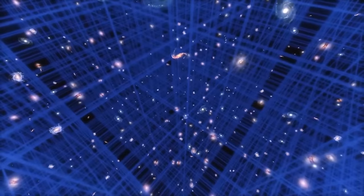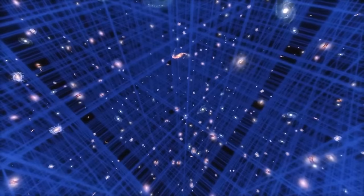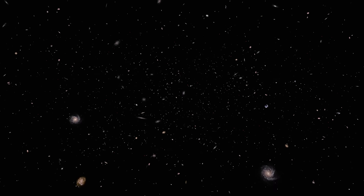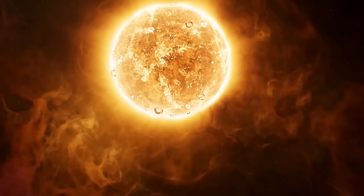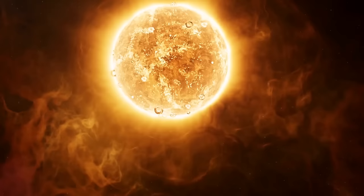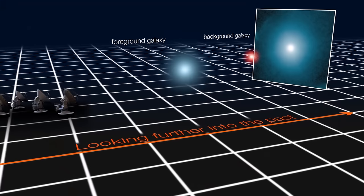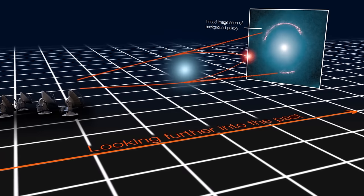General relativity provided a profound framework for understanding gravity as the curvature of spacetime. In the vast cosmic ballet, massive objects like stars and galaxies warped the fabric of spacetime, influencing the paths of other objects through gravity. General relativity's predictions have been confirmed through numerous experiments, including the bending of light around massive objects, known as gravitational lensing, and the detection of gravitational waves - ripples in spacetime itself.